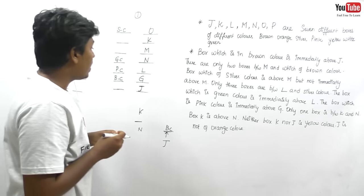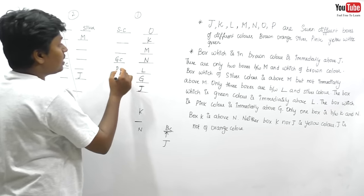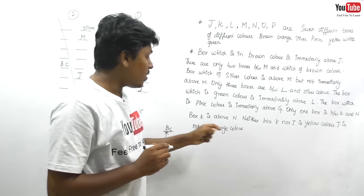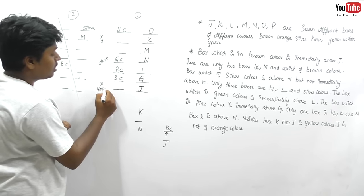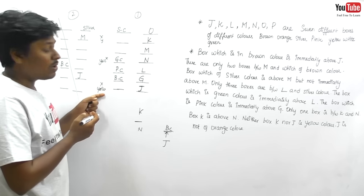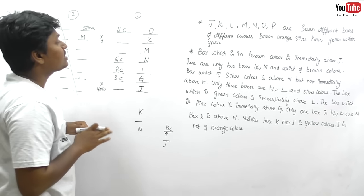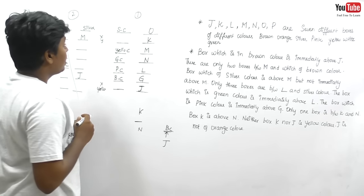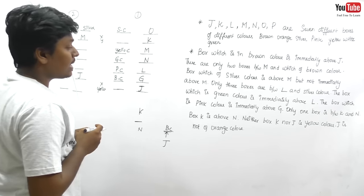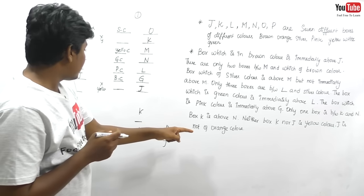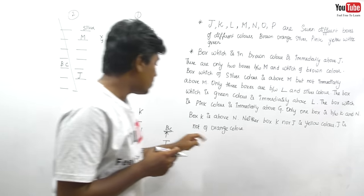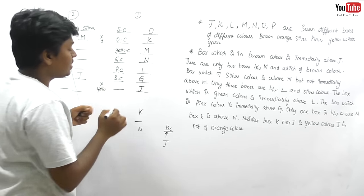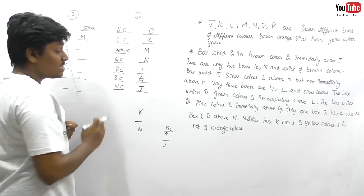Neither K nor N is yellow, and J is not yellow — so M must be yellow. J does not like orange, so K should like orange. The only remaining color is white, which goes to J. We have completed the entire arrangement. This is average level difficulty — not that much tougher — but compared to IBPS and other exams, it is tougher in prelims.